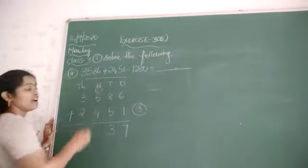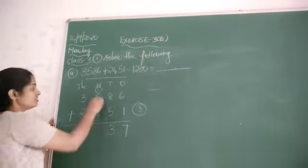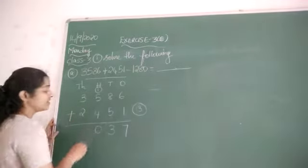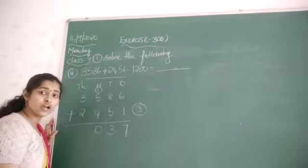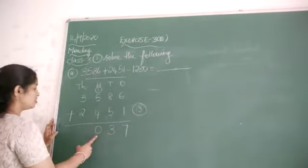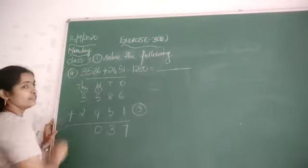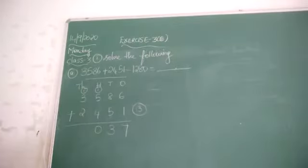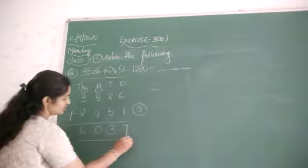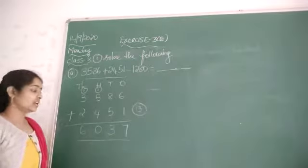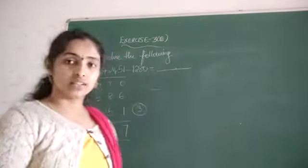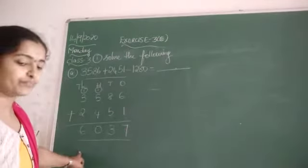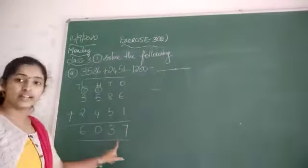One carry plus five is six. Six plus four is ten. So zero here, and one carry for the next column. One plus three is four. Four plus two is six. So this is the required answer — six thousand and thirty seven.